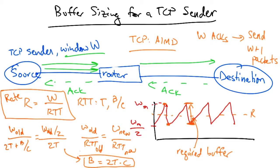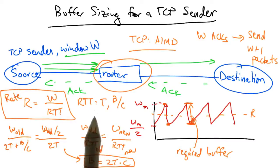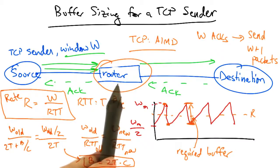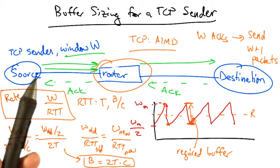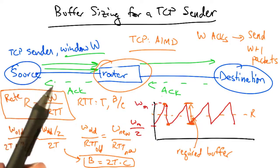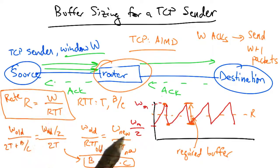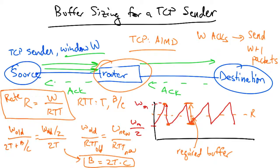Now the rule of thumb makes sense for a single flow, but a router in a typical backbone network has more than 20,000 flows. And it turns out that this rule of thumb only really holds if all of those 20,000 flows are perfectly synchronized. If the flows are desynchronized, then it turns out that this router can get away with much less buffering.